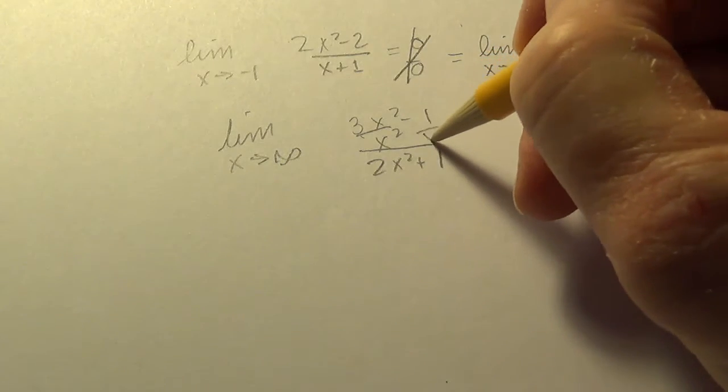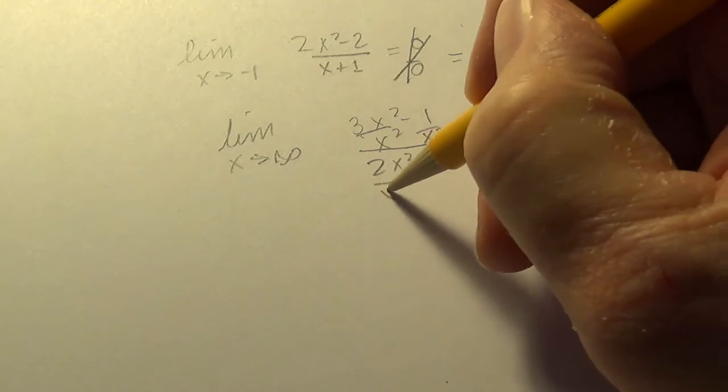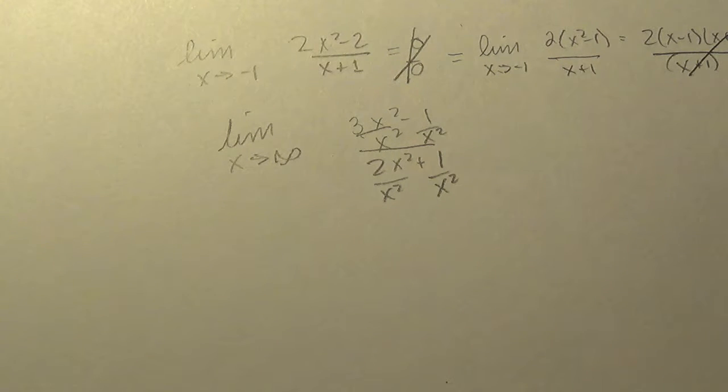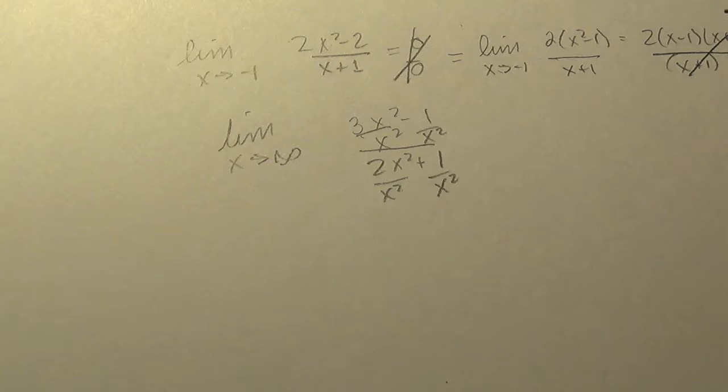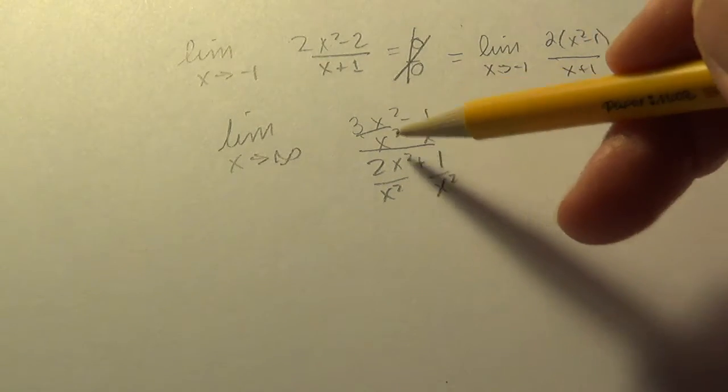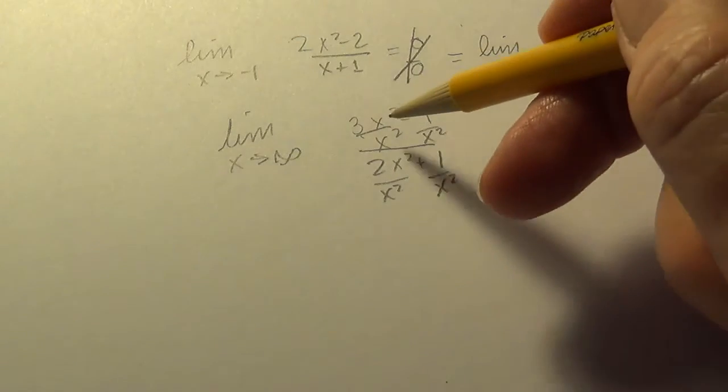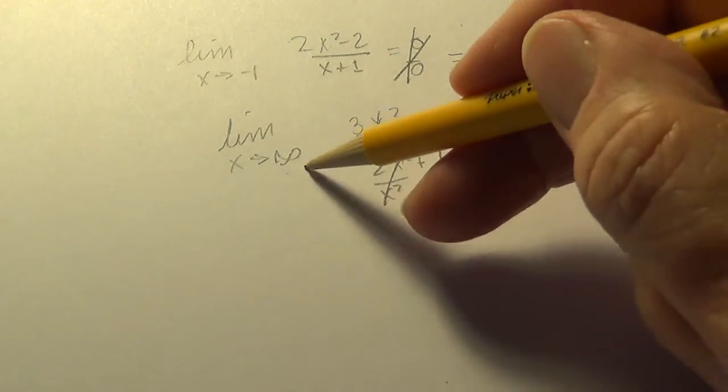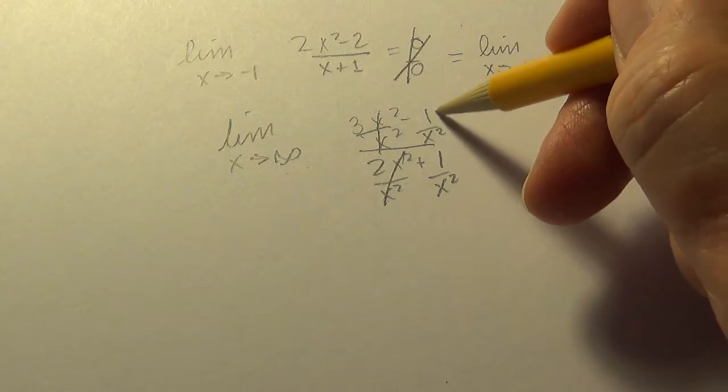So if you put infinity into this you get a very very huge number minus 1 over another huge number plus 1. They're both infinite, so it didn't really work out by plugging infinity into anything.